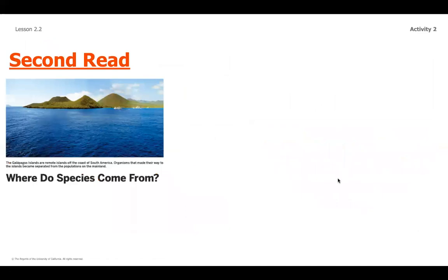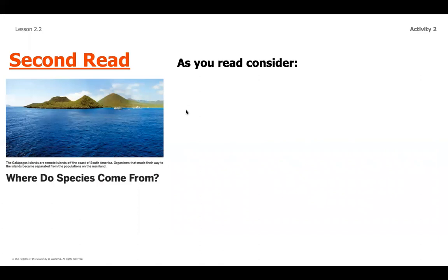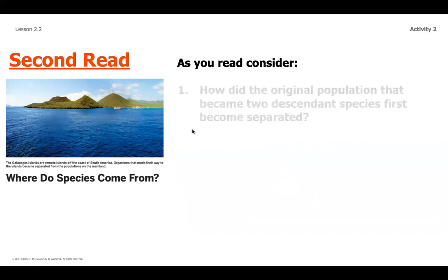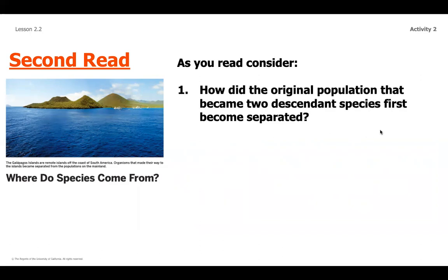If you did not get a chance to fill out the warmup, please make sure you pause and go back in the video to complete that. We're going to move on to looking at this reading from last time in Lesson 2.2. But now during our second read, there are going to be a few things that we're really going to be dialing in and trying to dig a little bit deeper in that article. Strong readers don't necessarily always read an article one time — a lot of times they'll read it once to get the general idea and then go back and look at things more closely, really focusing on what they're trying to learn.